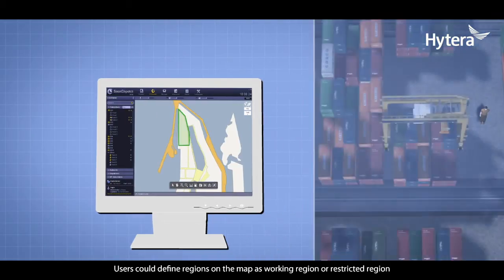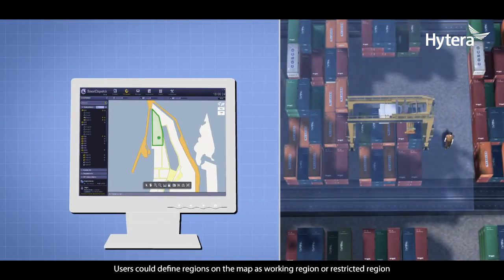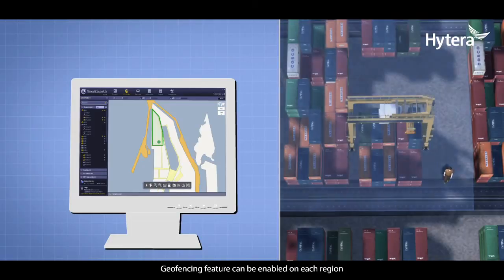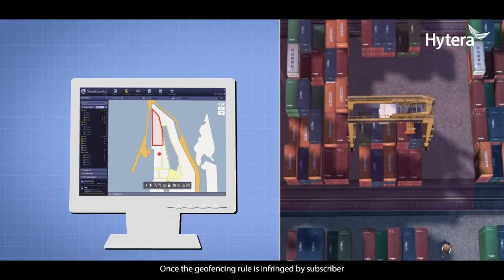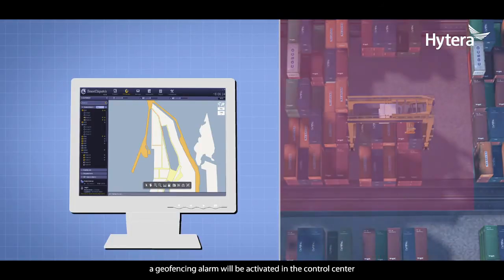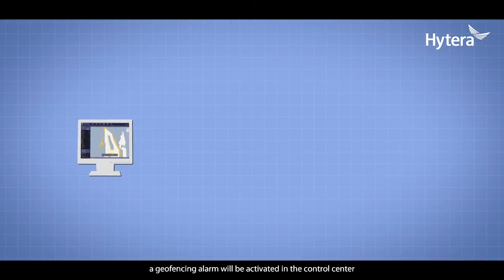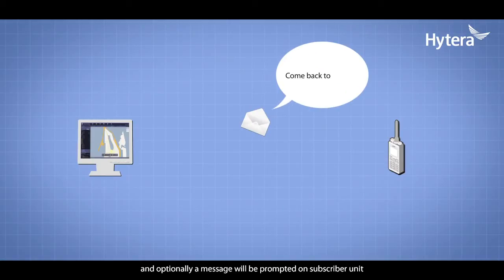Users could define regions on the map as working region or restricted region. Geofencing feature can be enabled on each region. Once the geofencing rule is infringed by a subscriber, a geofencing alarm will be activated in the control center and optionally a message will be prompted on the subscriber unit.